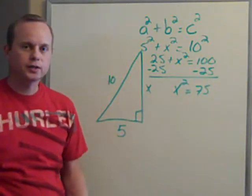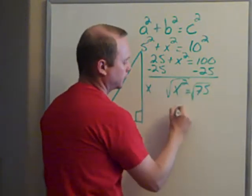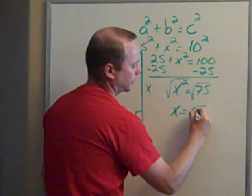In order to simplify this one, I take the square root of both sides. So I'm going to square root both sides. X equals the square root of 75.